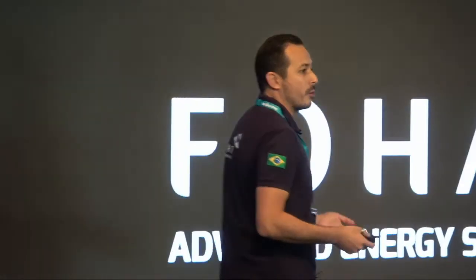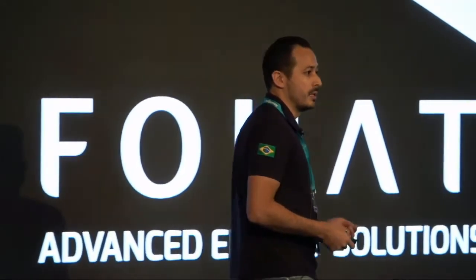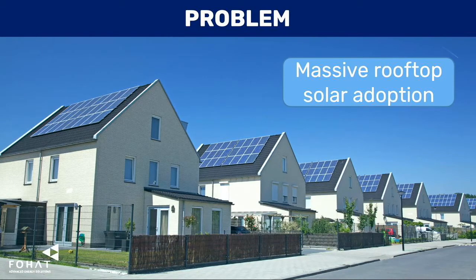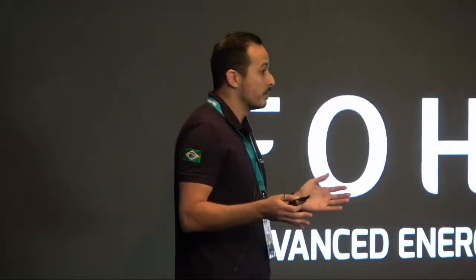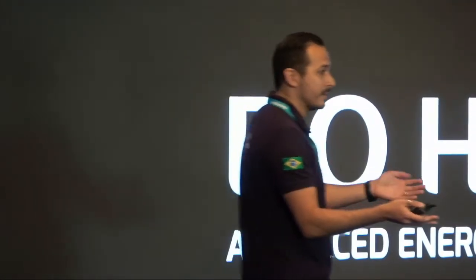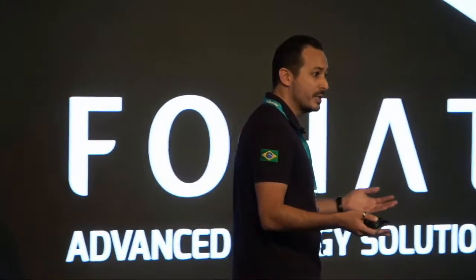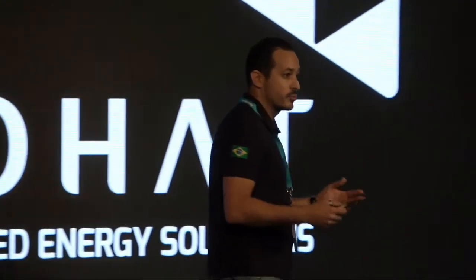Let's talk a little bit about the energy problems here in Australia. The image you see behind me is becoming more common to see in Australia nowadays. It represents the massive adoption of solar systems, especially in residential sites. Today, 20% of Australian households already have a solar system — that's two million people. That's good for them; it's new and renewable energy, but at the same time it causes some troubles to the network.